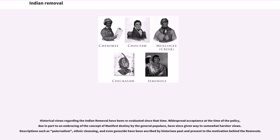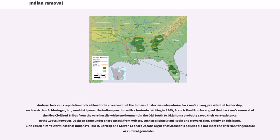Historical views regarding Indian removal have been re-evaluated since that time. Widespread acceptance at the time of the policy, due in part to an embracing of the concept of manifest destiny by the general populace, have since given way to somewhat harsher views. Descriptions such as paternalism, ethnic cleansing, and even genocide have been ascribed by historians past and present to the motivation behind the removals. Andrew Jackson's reputation took a blow for his treatment of the Indians. Historians who admire Jackson's strong presidential leadership, such as Arthur Schlesinger Jr., would skip over the Indian question with a footnote. Writing in 1969, Francis Paul Prucha argued that Jackson's removal of the five civilized tribes from the very hostile white environment in the Old South to Oklahoma probably saved their very existence. In the 1970s, however, Jackson came under sharp attack from writers such as Michael Paul Rogin and Howard Zinn, chiefly on this issue. Zinn called him 'exterminator of Indians.' Paul R. Bartrop and Steven Leonard Jacobs argued that Jackson's policies did not meet the criterion for genocide or cultural genocide.